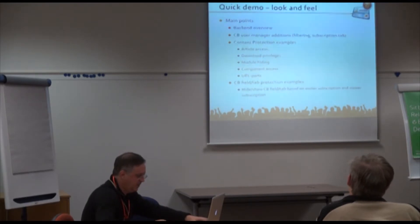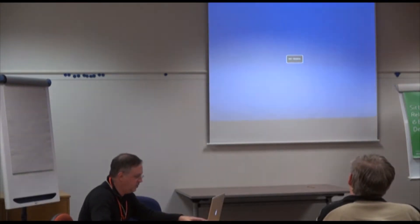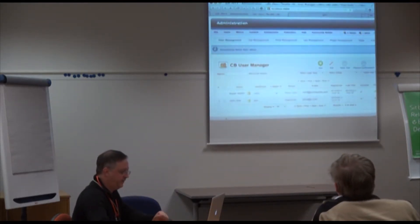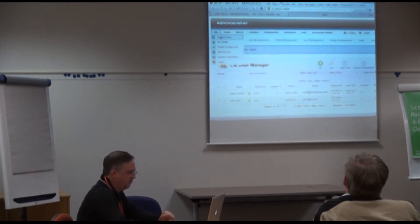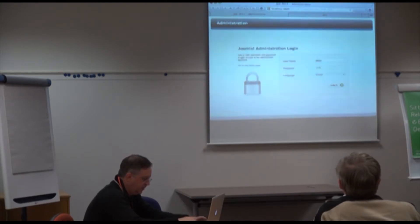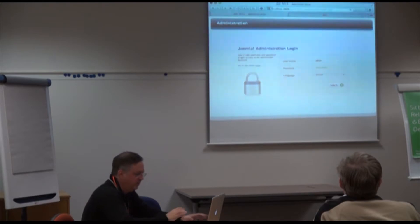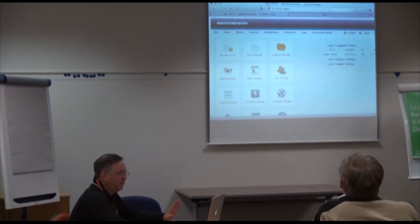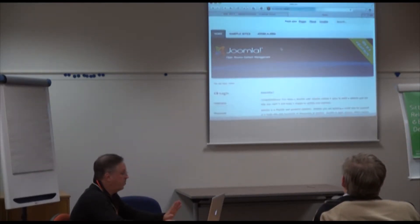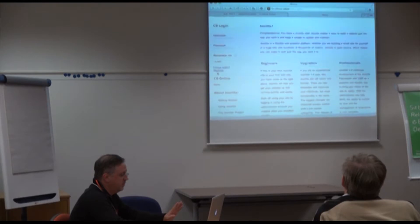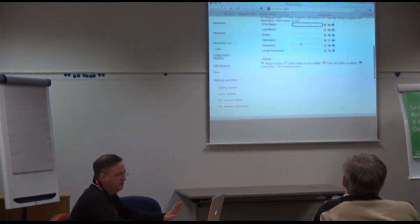Now switching to the live demo. This is a Joomla 2.5 site with Community Builder installed and sample content. The front end shows the sample content with Community Builder logged in, and the registration form is Community Builder's. The goal is to install CB Subs and create two plans: a free lifetime plan and a paid advanced plan.